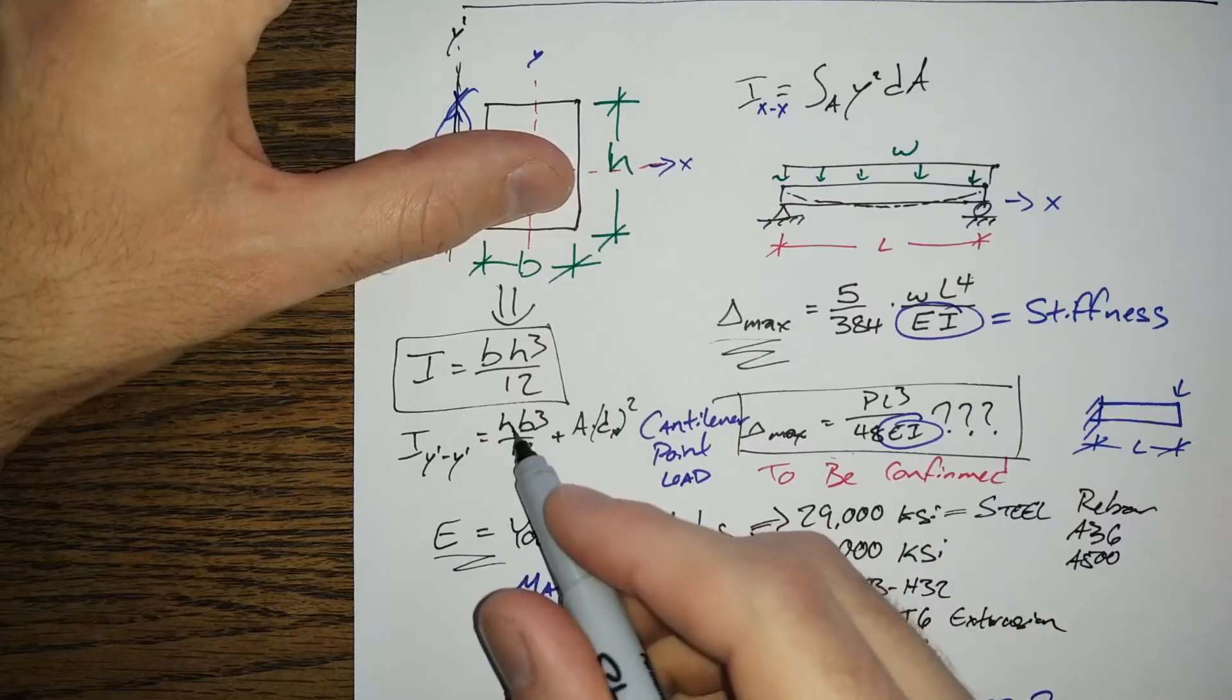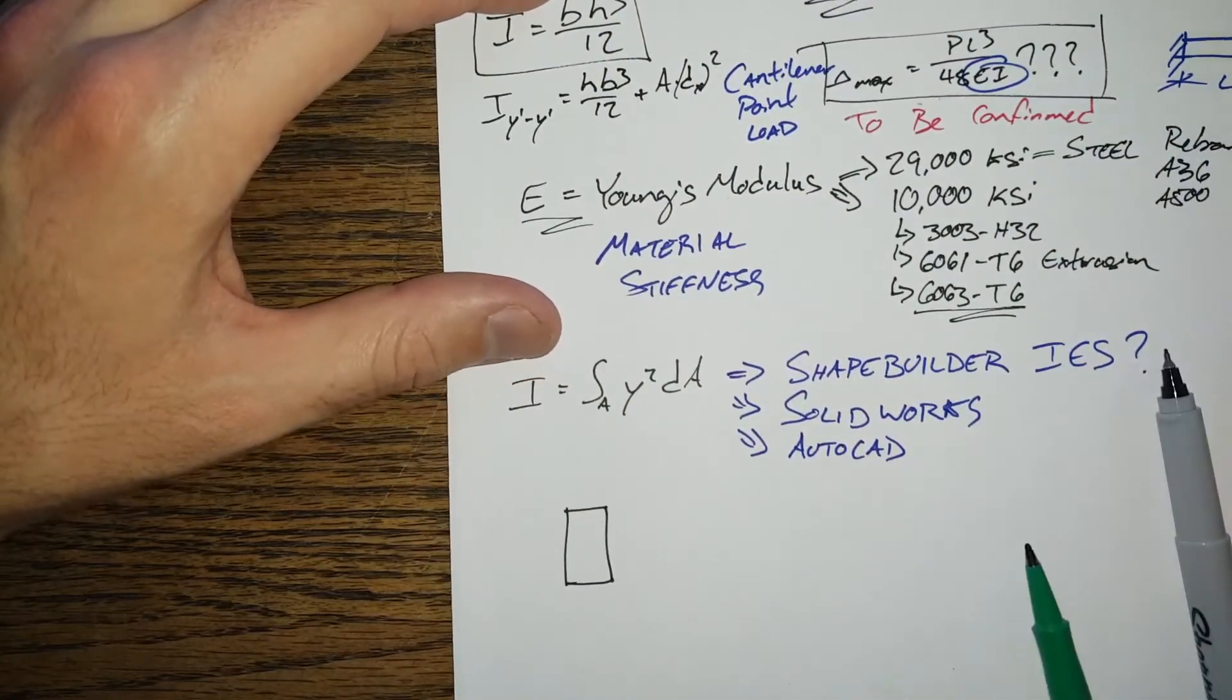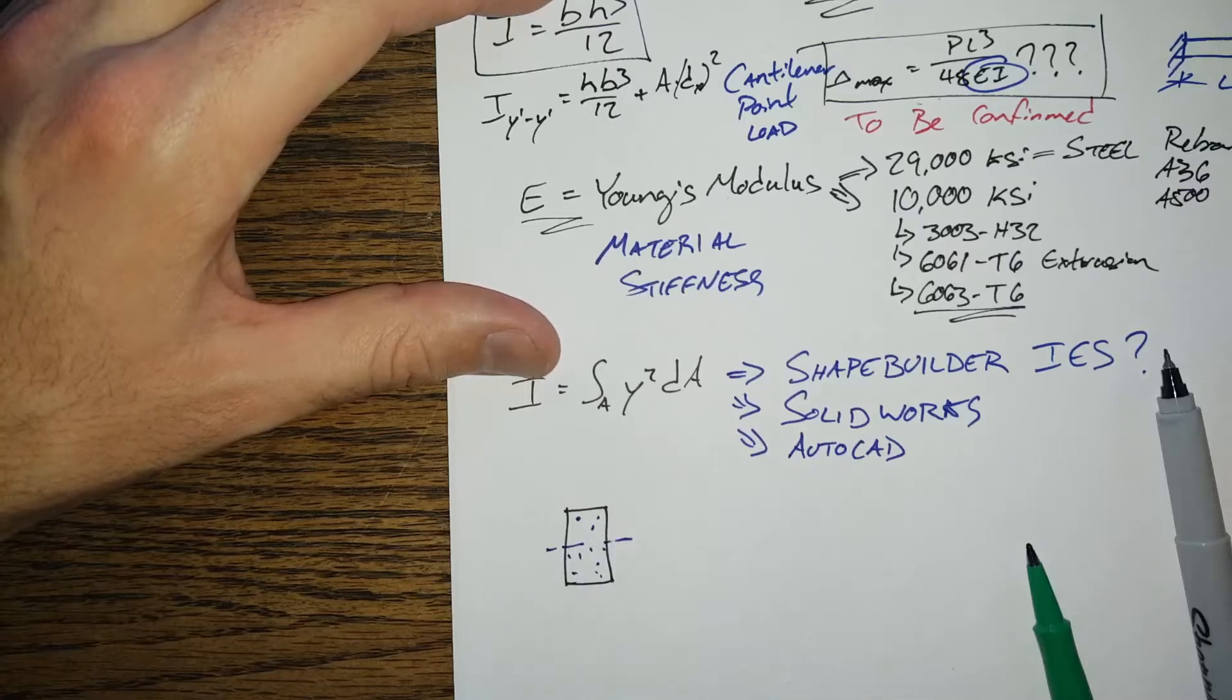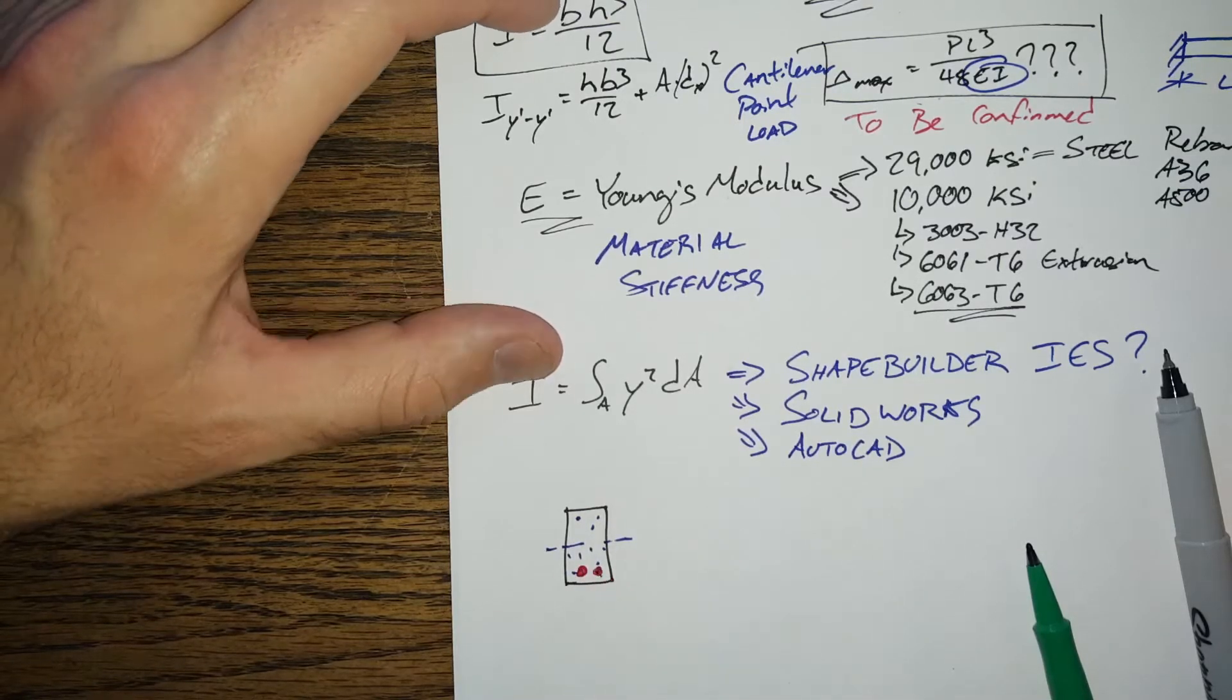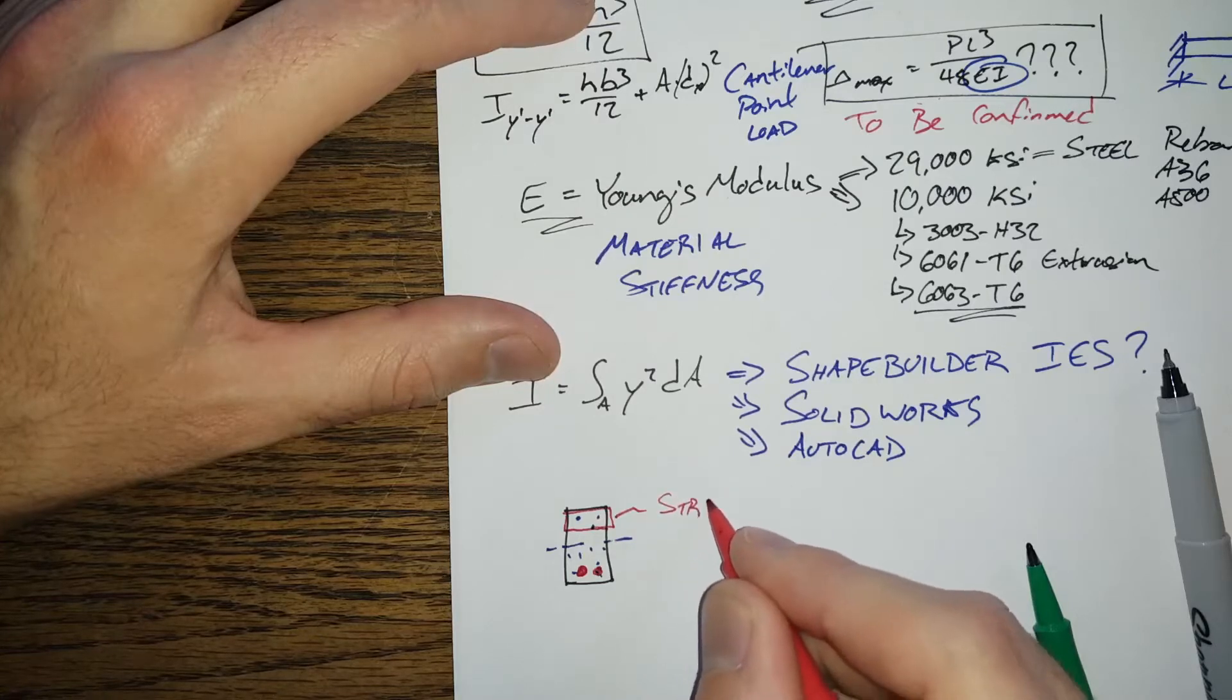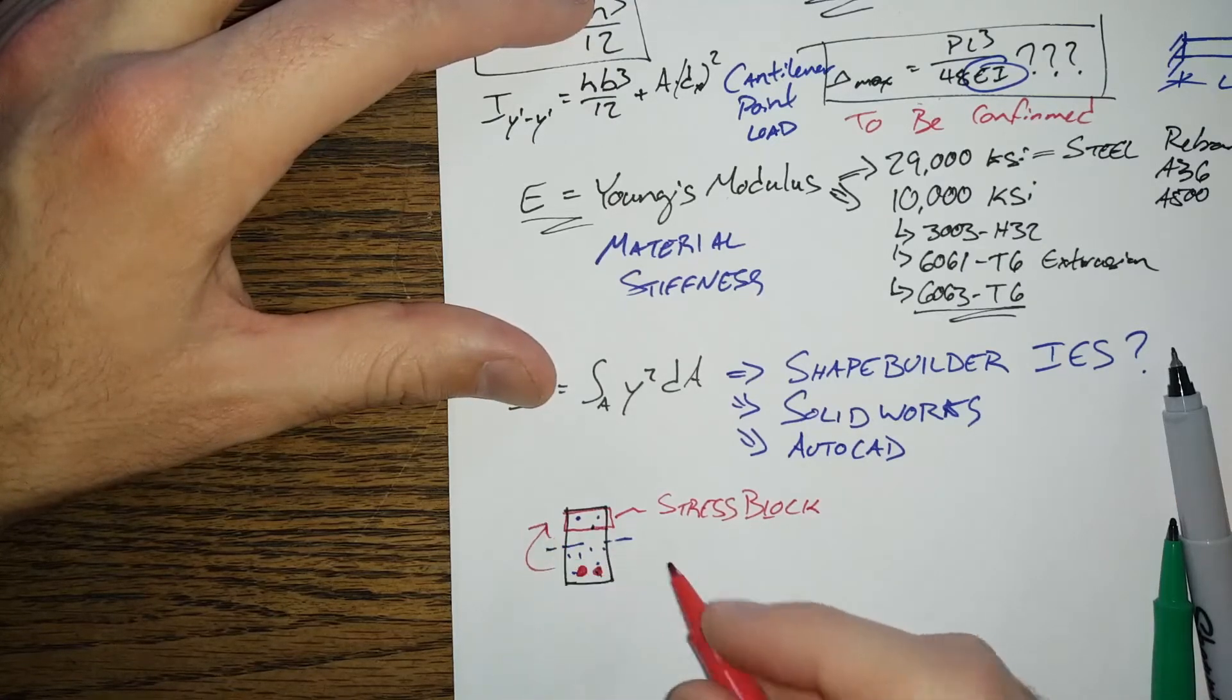An example would be when you've got a reinforced concrete beam where this might have a neutral axis up here, this is concrete, speckle it a little bit, but we've also got some rebar down here. And for those of you who don't know, the way that we look at concrete, you end up with this stress block that takes the compression, so we're looking at bending it like this.